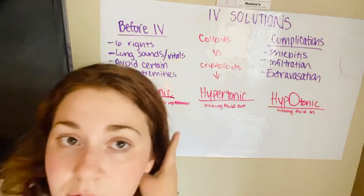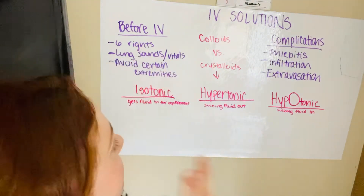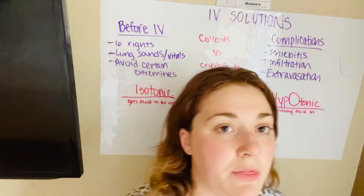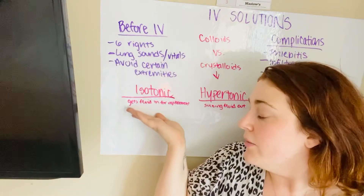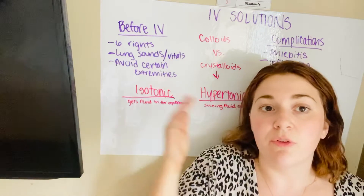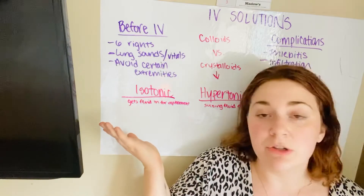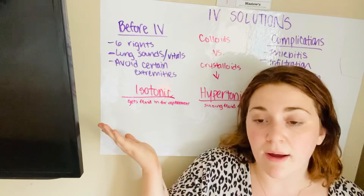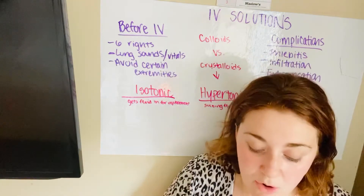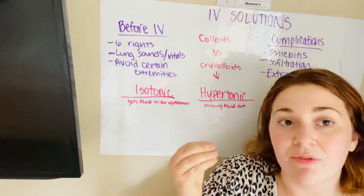Starting with isotonic — that's normal saline, the 0.9, and also lactated ringers. It is getting fluid in for replacement. With the cells, they're not shrinking or expanding — this is just to get the fluid into the body. Why do you want to use this? Patients that come in from emergency situations, maybe burns, shock — you need to get fluids in them because they're just not doing well. So isotonic fluids are used for replacing the fluid in the body.